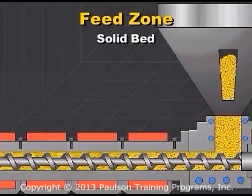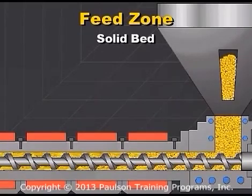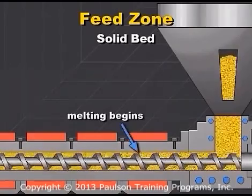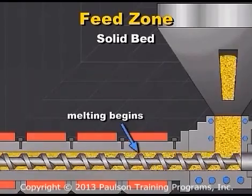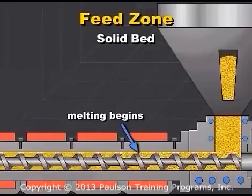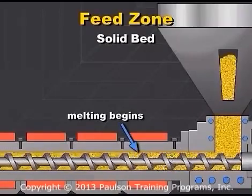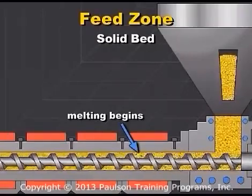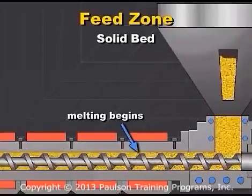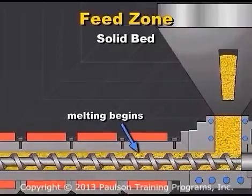As the plastic raw material is conveyed forward in the feed section, it is compacted into what is often called a solid bed. As this solid bed of plastic moves forward, the plastic begins to melt at the surface in contact with the barrel. This melting typically starts at a distance of 4 or 5 screw flights from the feed throat.